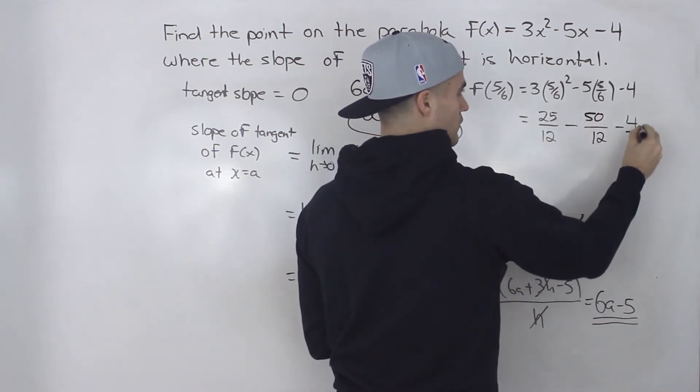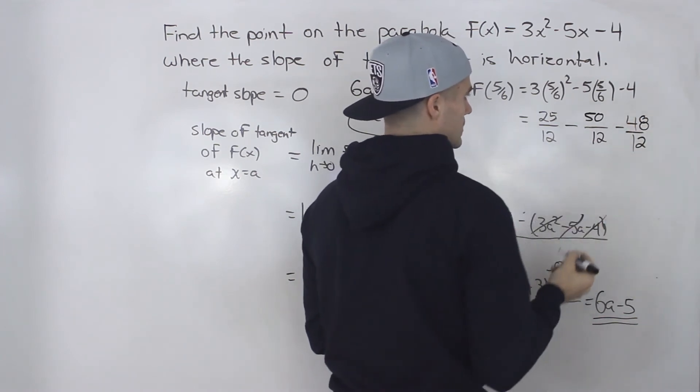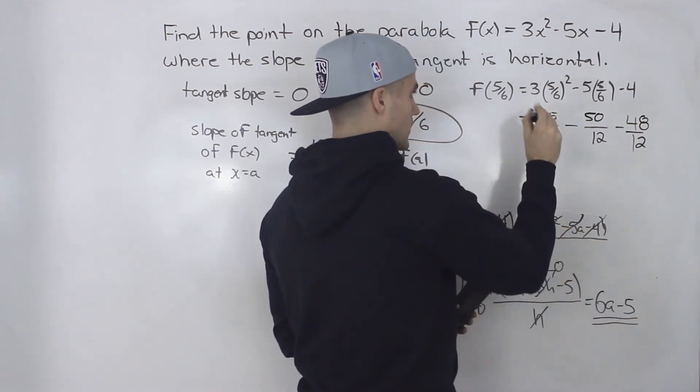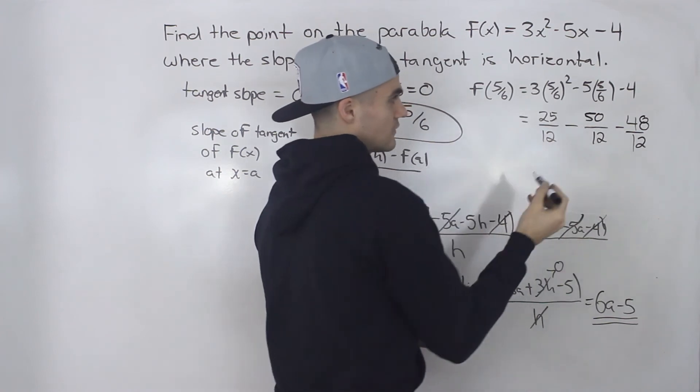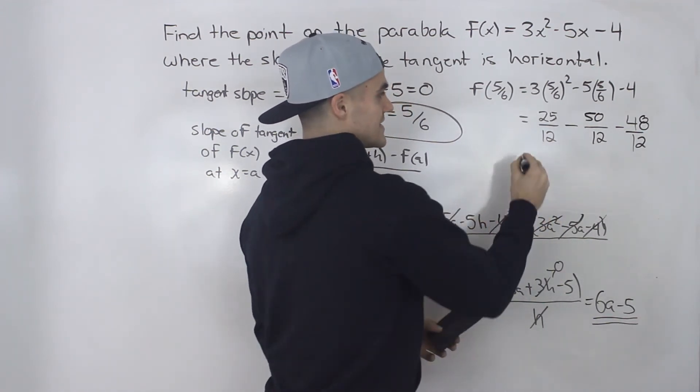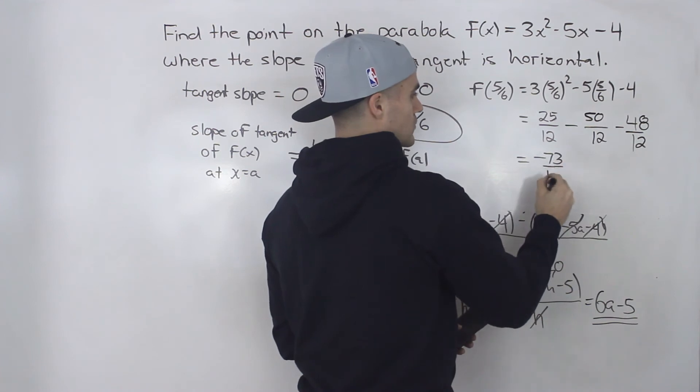And then if we have a 12 here, multiplying the top by 12 gives us -48. So 25 - 50 gives us -25, minus 48 gives us -73/12.